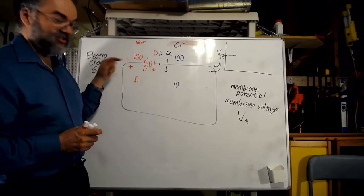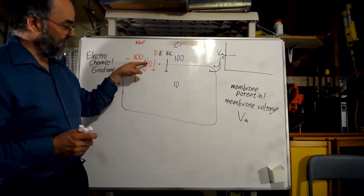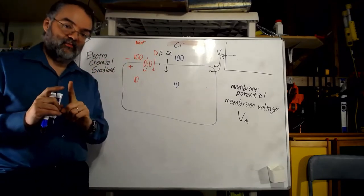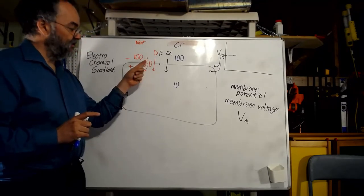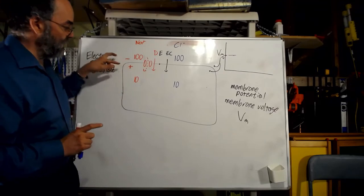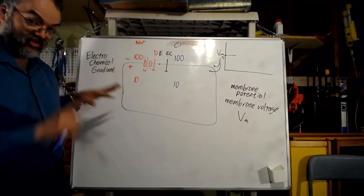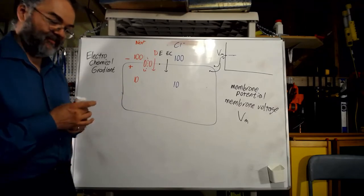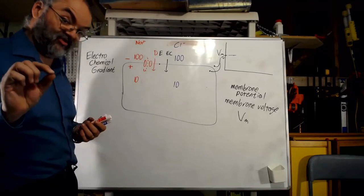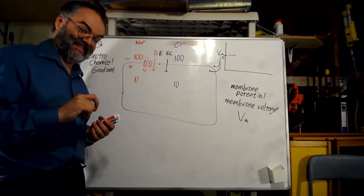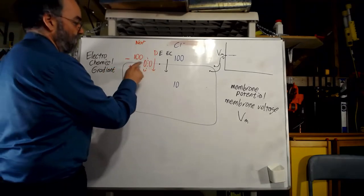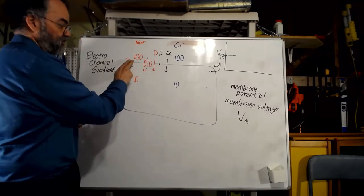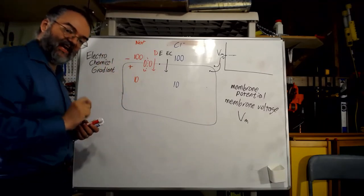Think about what that's going to do to a sodium ion sitting in the channel. Pause the video and think: will this push it inward or outward? A positive sodium ion will be attracted to the negative outside, which means this voltage is going to be pushing sodium ions outward a little bit. Right now, just a few sodium ions have come in, so that's not very strong. The outward push is weak, but it's not zero.